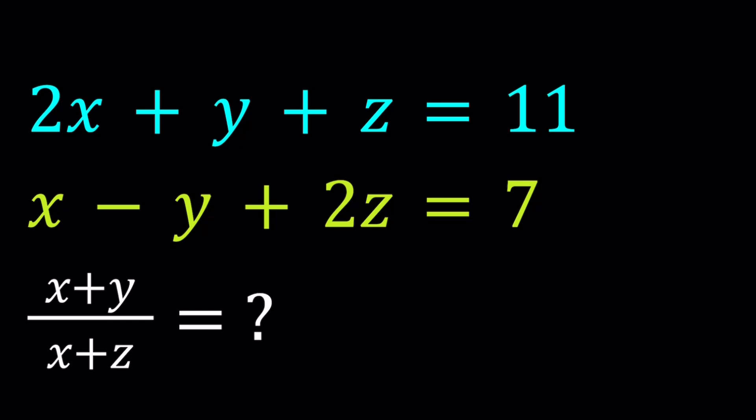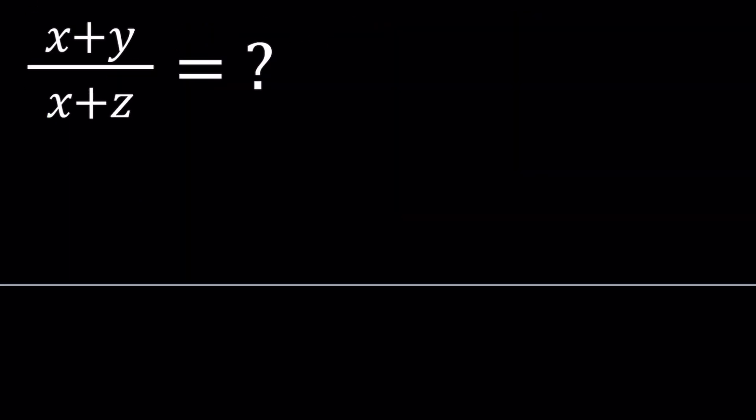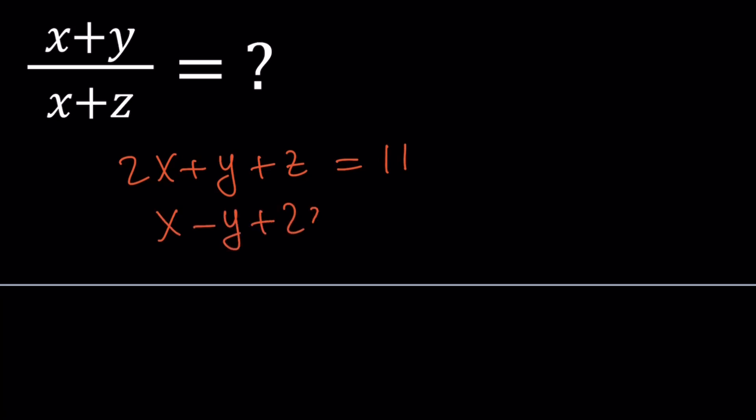I'll be presenting two methods. I'm not exactly sure about the first method because I haven't tested it — I'm just going to do it on the fly. So we have these two equations: 2x plus y plus z is equal to 11, and x minus y plus 2z equals 7. We're not necessarily looking for integer solutions, so this is not like a Diophantine system. There are probably infinitely many solutions anyway.